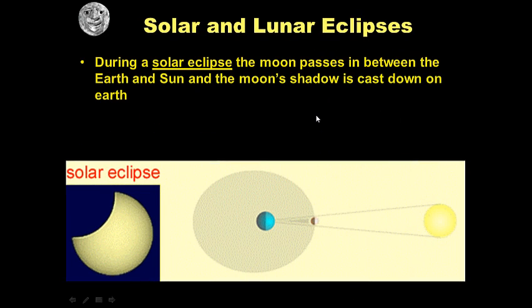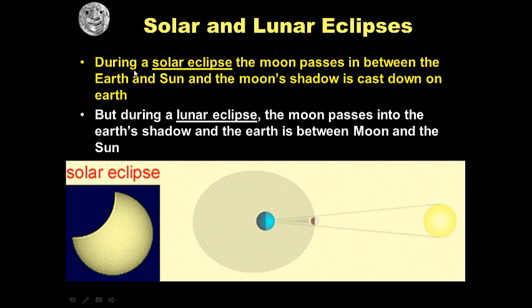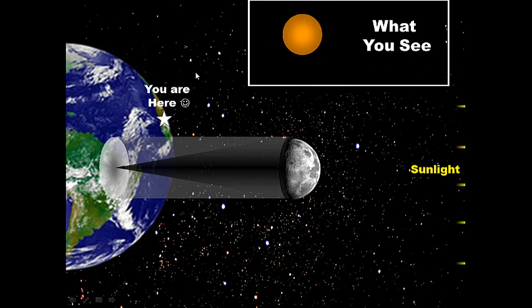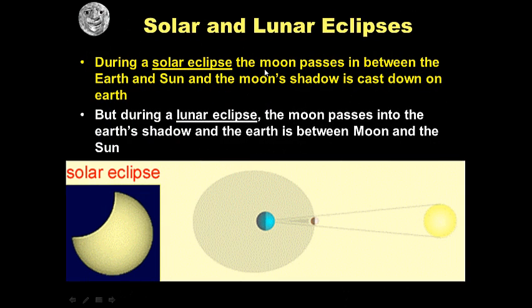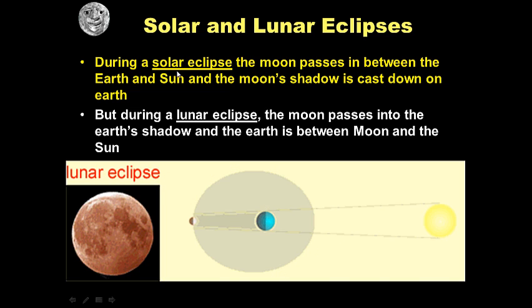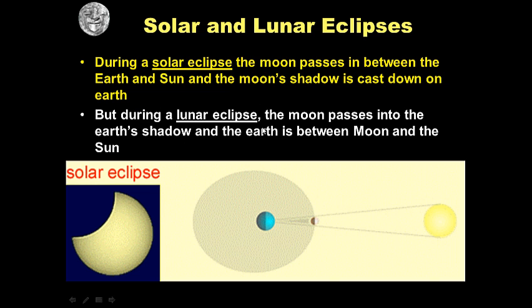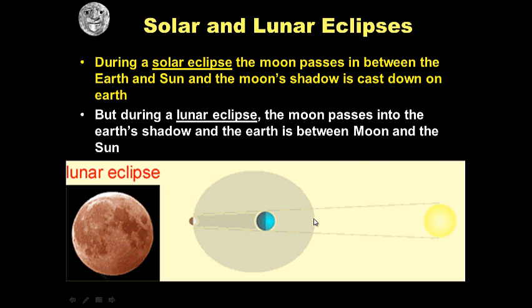Solar and lunar eclipses. During a solar eclipse the moon passes in between the earth and the sun and the moon's shadow is cast down on the earth. During a lunar eclipse though, the moon passes into the earth's shadow and the earth is between the moon and the sun. Here during a lunar eclipse the moon is in the earth's shadow. That is a lunar eclipse.